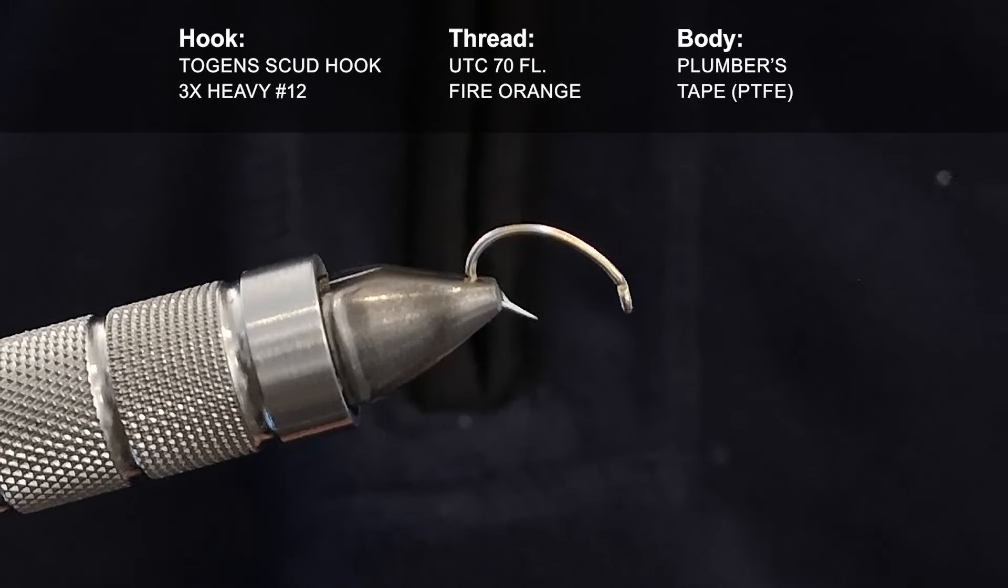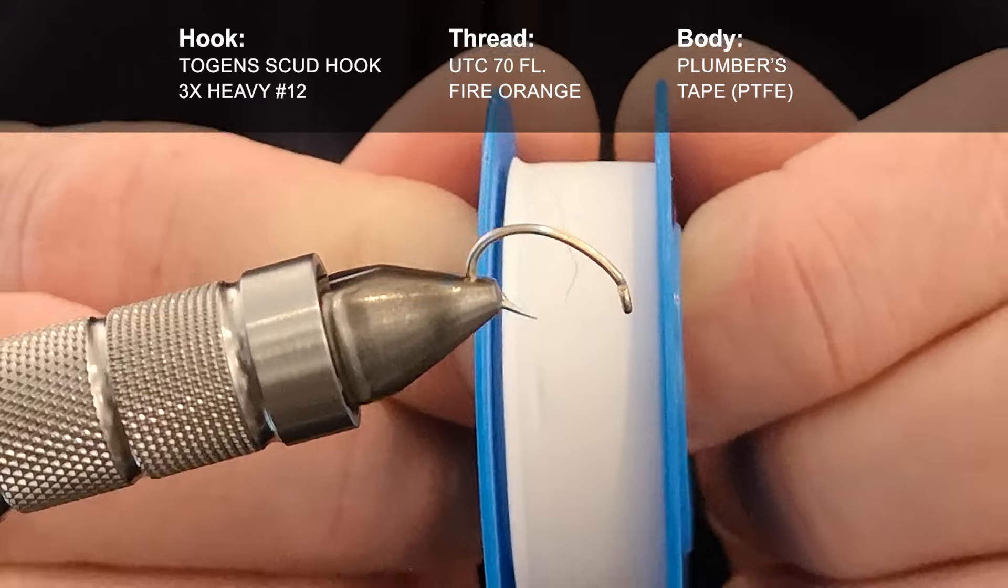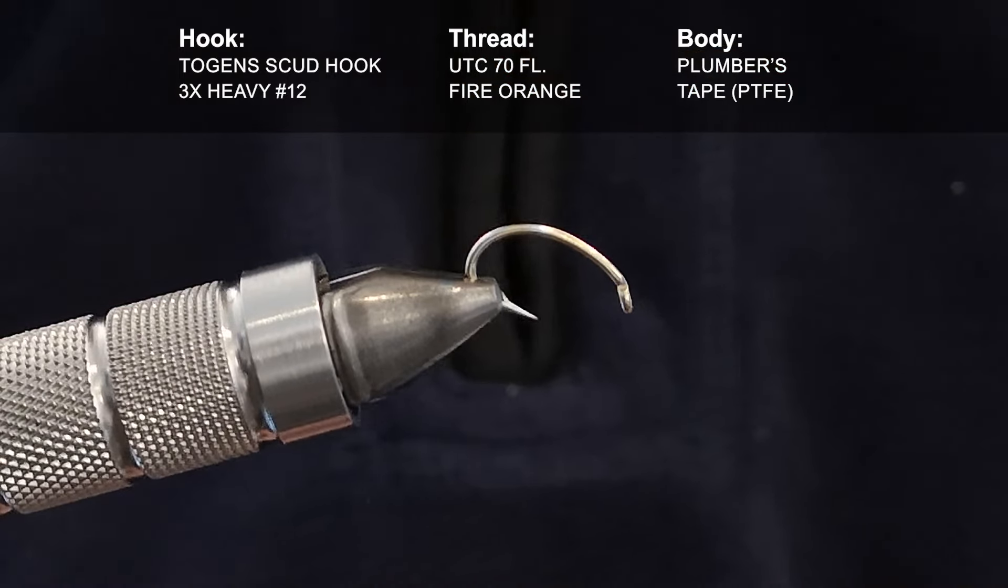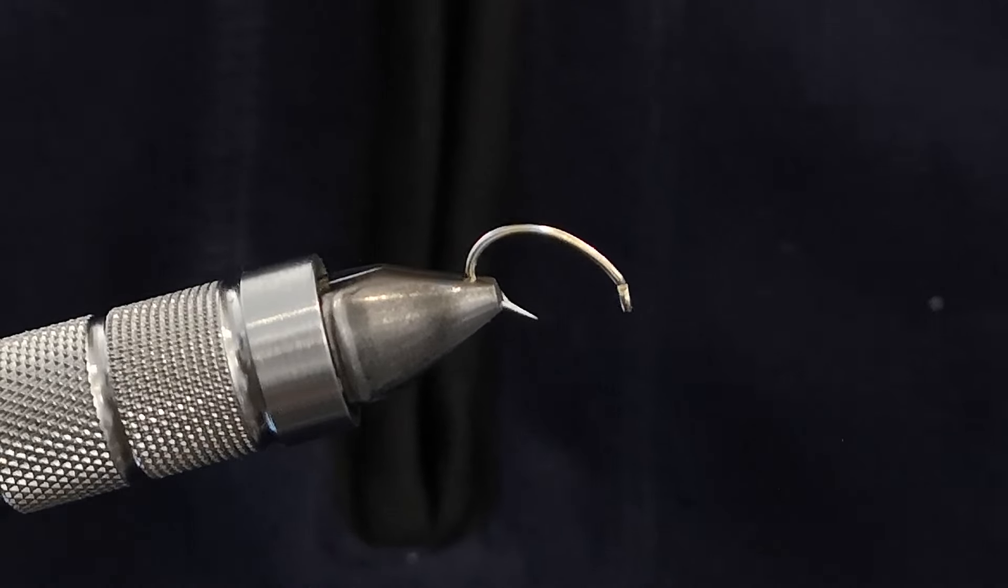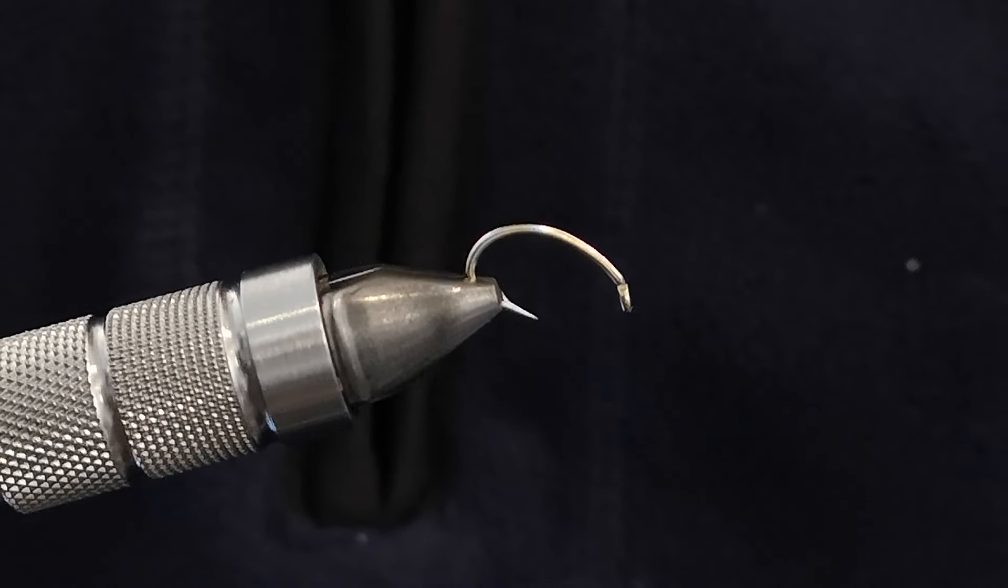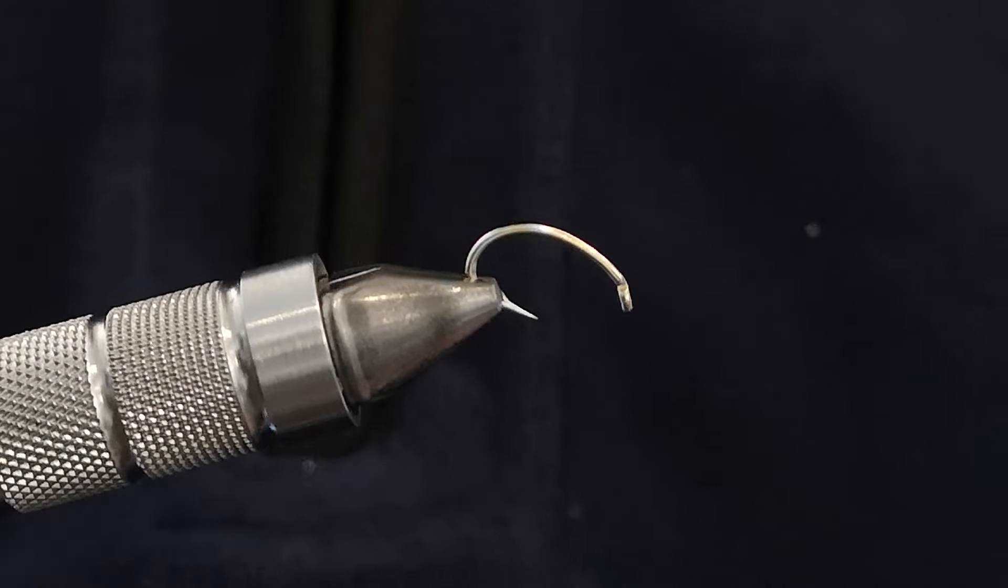And the only other thing you're going to need is some of this stuff which is plumber's tape. PTFE plumber's tape. You could use white thread, don't get me wrong it's probably easier, but it doesn't give the same sheen and texture to the body that plumber's tape does and I really like this. So let's get on and tie the fly.